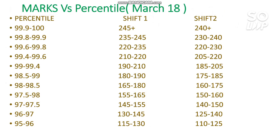Now for the last day — March 18 — here is the data. For 99.9 to 100 percentile you need to score 245 plus. For 99.8 to 99.9 you need to score 235 to 245. For 99.6 to 99.8 it is 222 to 235. For 99.4 to 99.6 you need to score around 225, and for 98.5 to 99 you need to score 180 to 190.